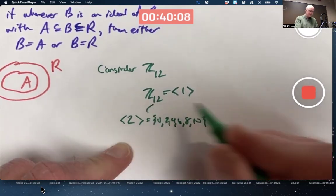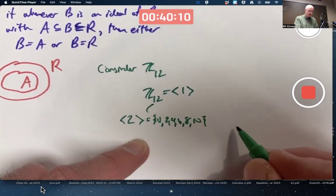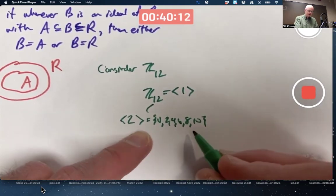The principal ideal generated by 2 is the same as the cyclic subgroup generated by 2. That's a subgroup of order 6. It's also a subring of order 6.